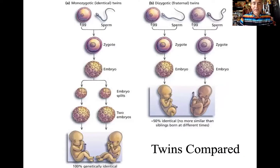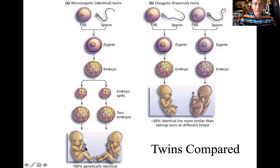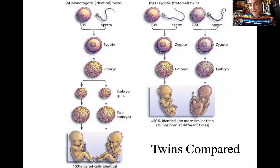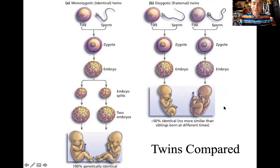To compare and contrast: monozygotic — one egg; dizygotic — two eggs. Dizygotic involves no splitting of the embryo; monozygotic involves splitting of the embryo. Monozygotic twins are 100% identical; dizygotic twins are only 50% identical. And again, depending on how many eggs are ovulated, we could end up with triplets or quadruplets in the dizygotic situation as well.